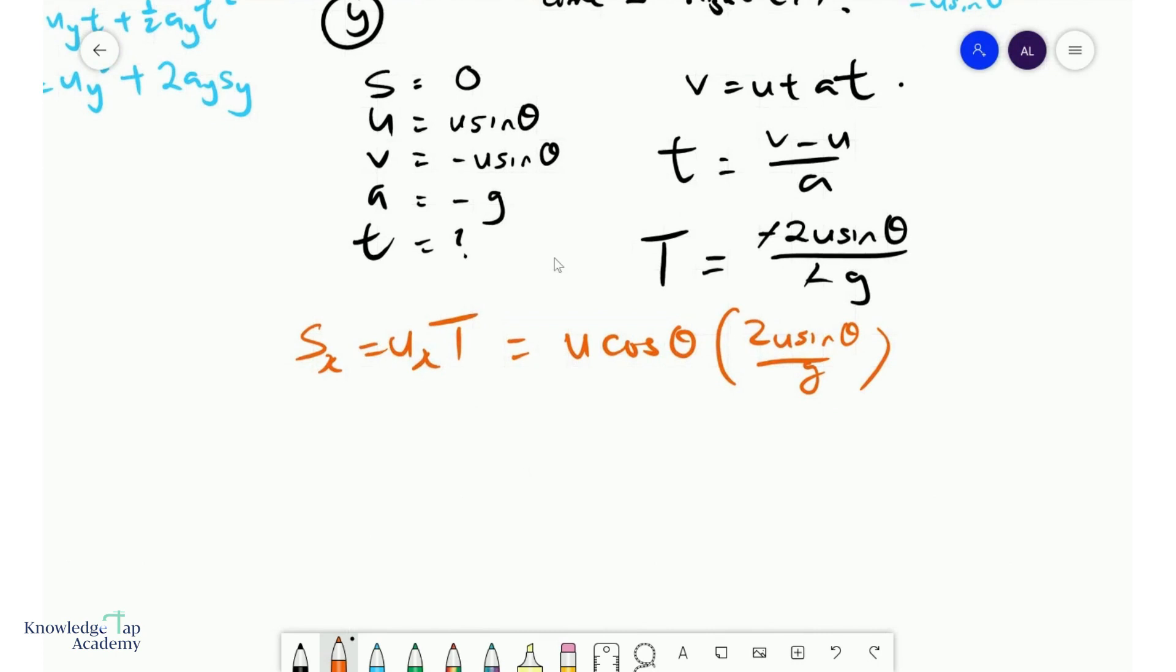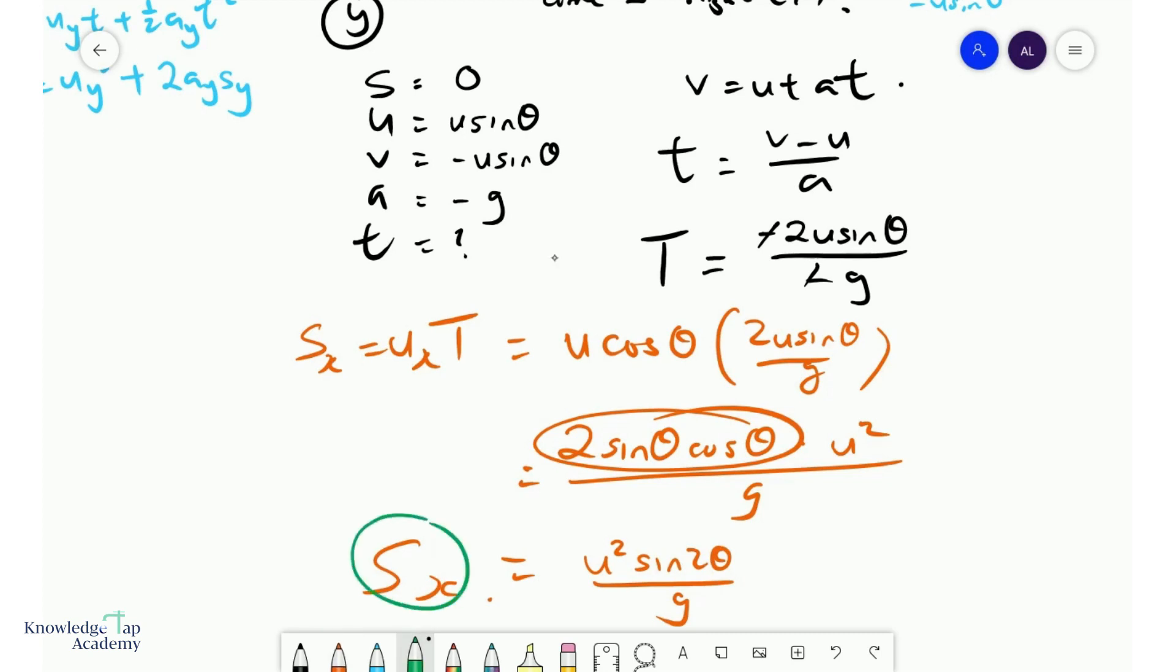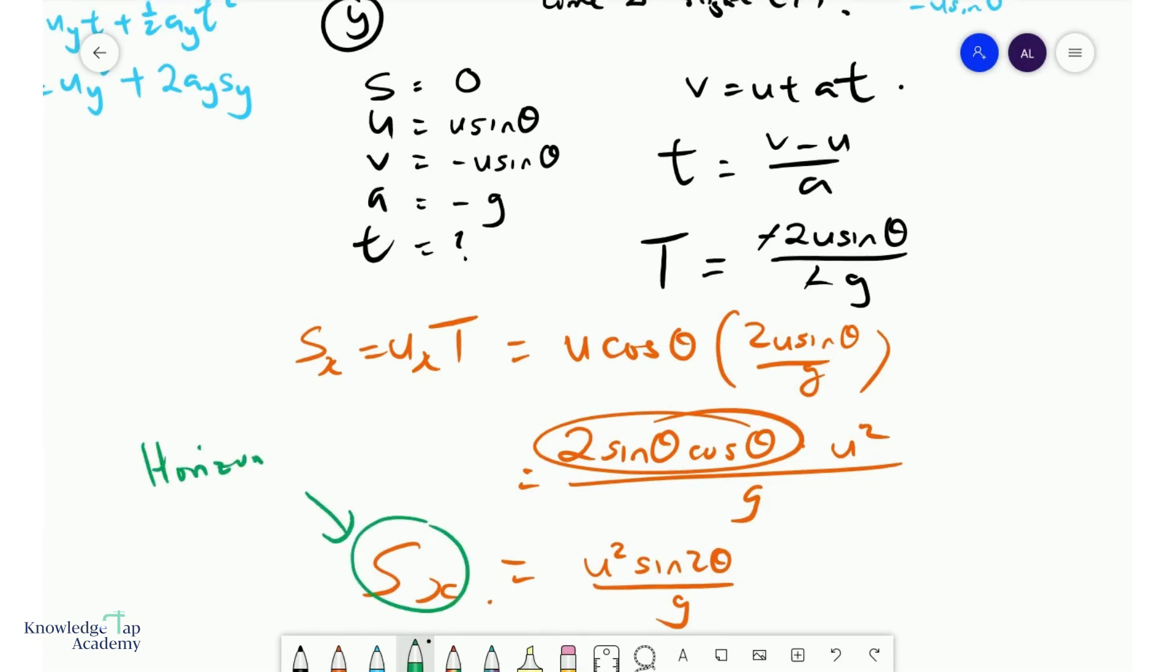And if we do some mathematics, we can show that this becomes 2 sine theta cosine theta times u squared over g. And of course, using the double angle formula, this is u squared sine 2 theta over g. And hence, we have another beautiful expression. Sometimes in projectile motion, we call this the horizontal range.